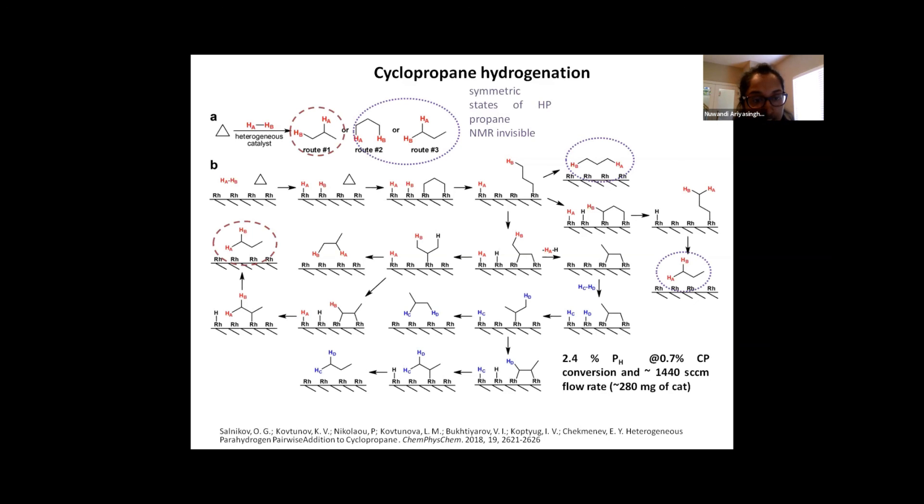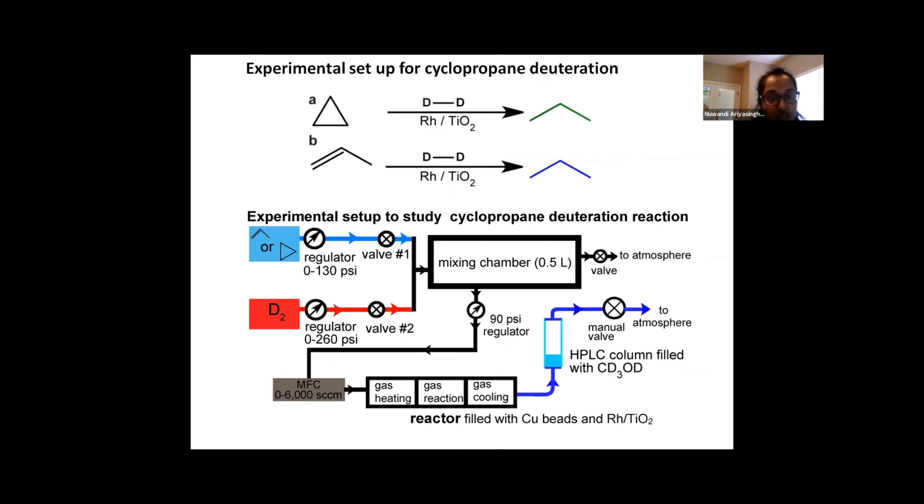So we used this study as a background to see and learn if actually route numbers two and three are happening. The way we approached this was through deuteration. The experiments were designed using two different molecules: cyclopropane and propylene for the comparison. And we studied their deuterated products. So this is the experimental setup that was used. Similar to before there is a mixing chamber and the gas mixture is sent through an MFC into the reactor. But the gas here is collected in a different way.